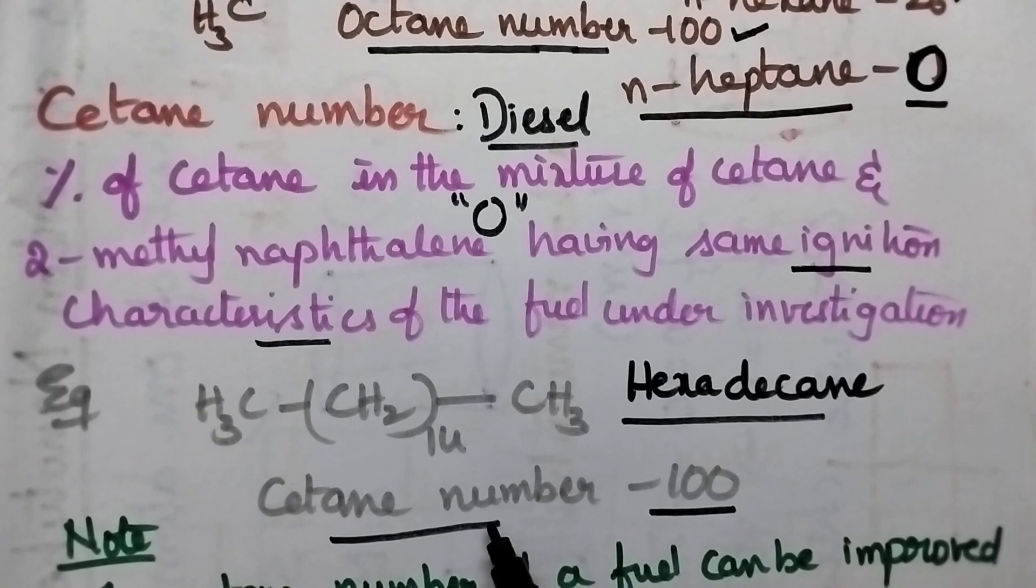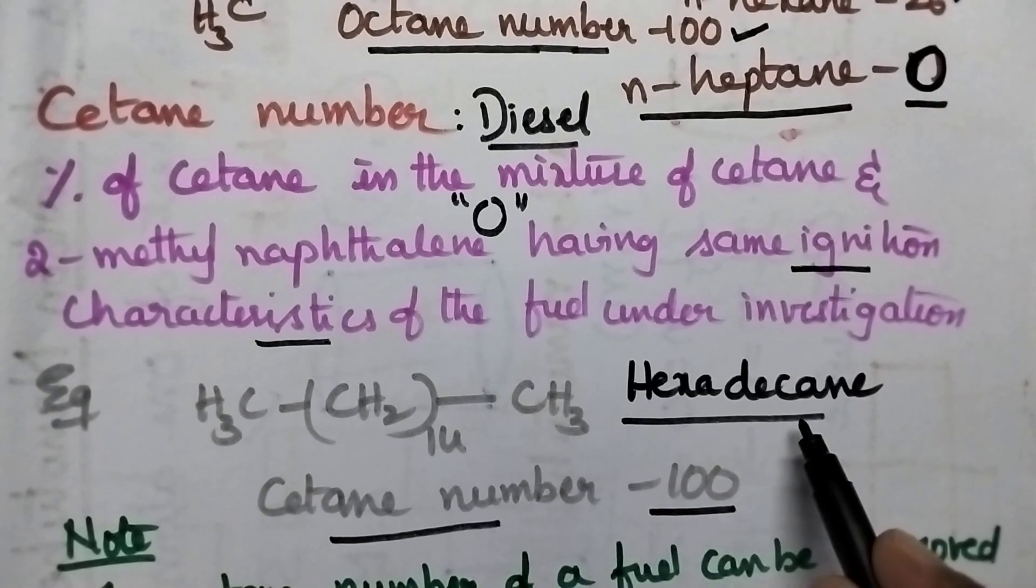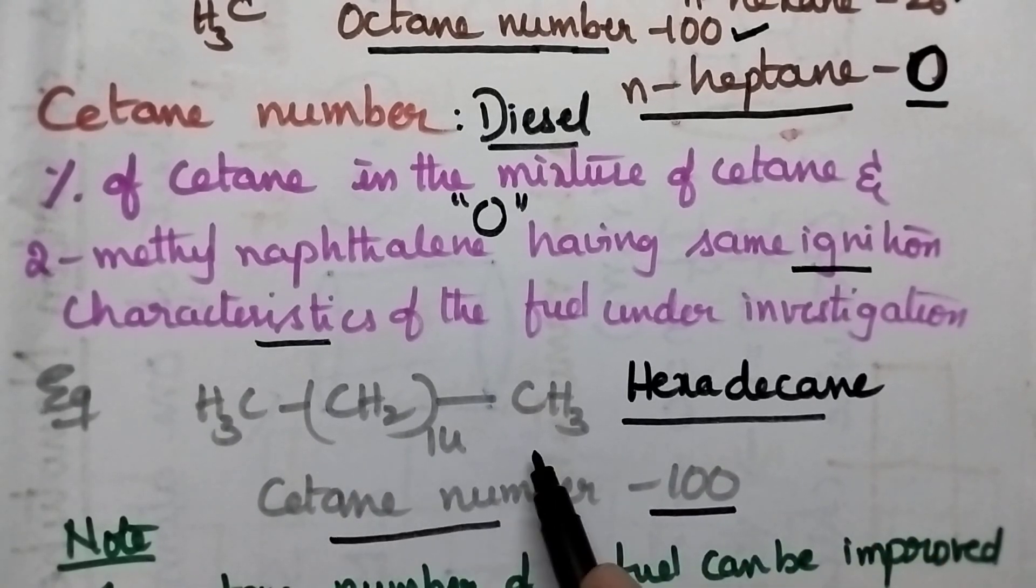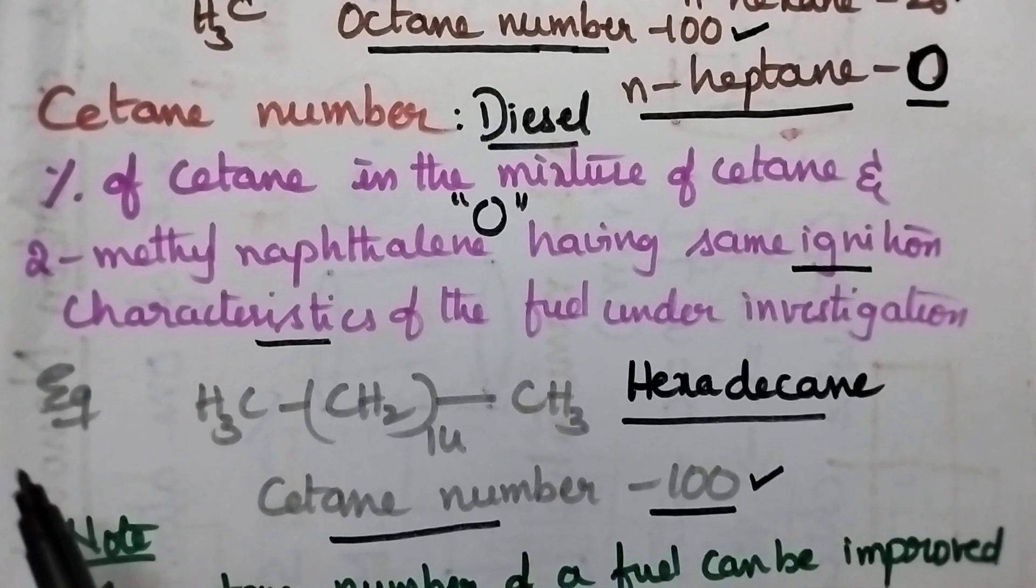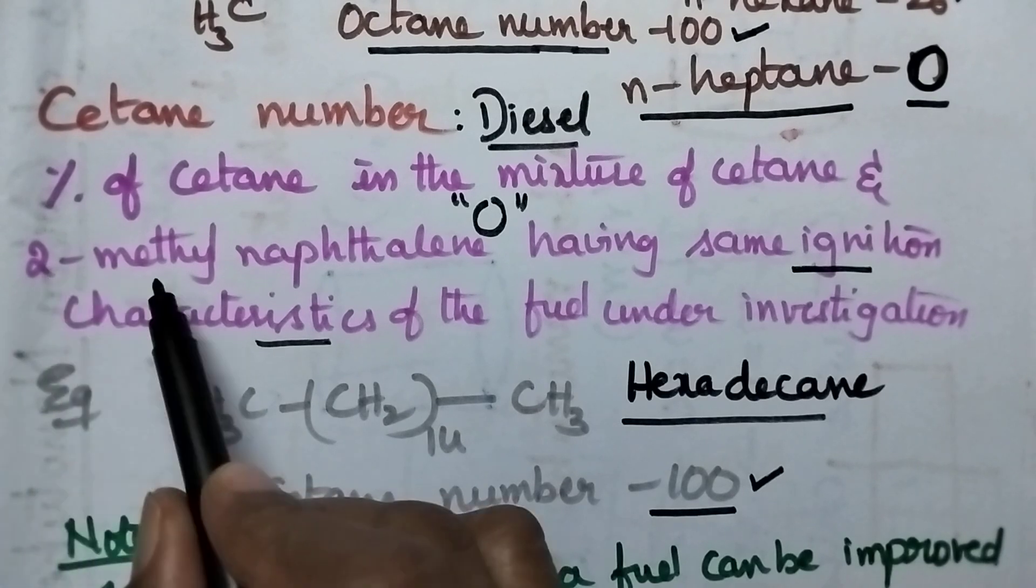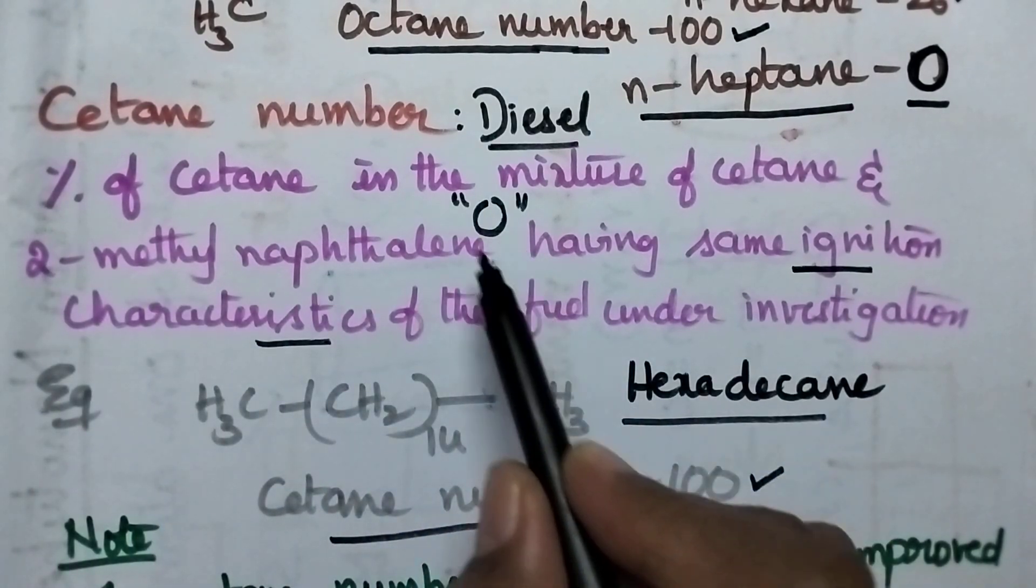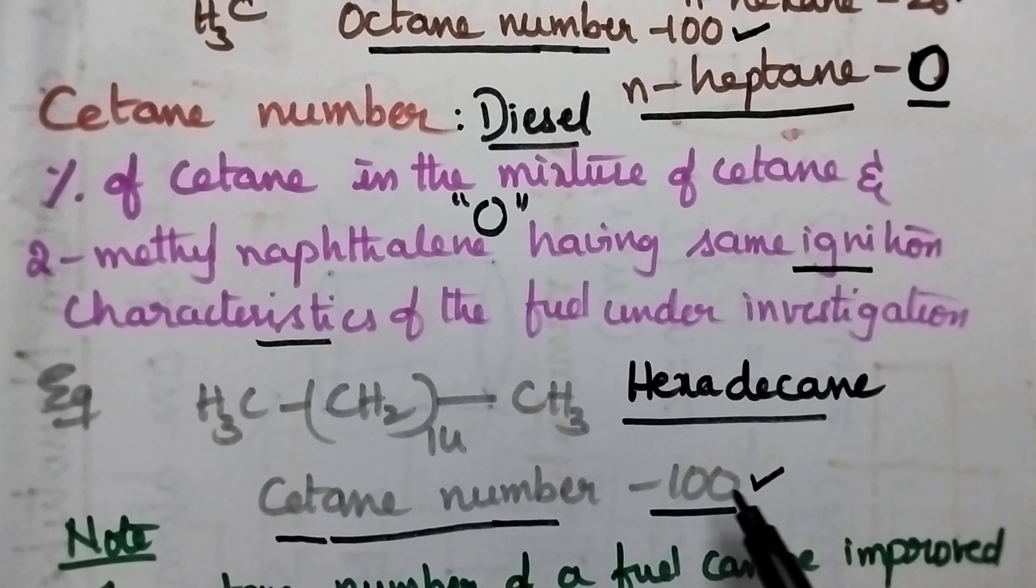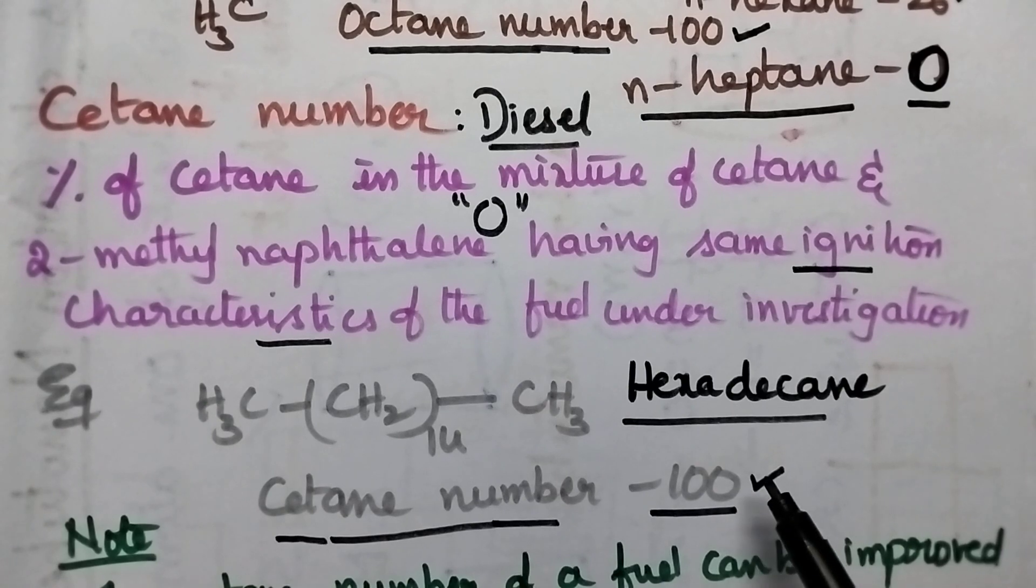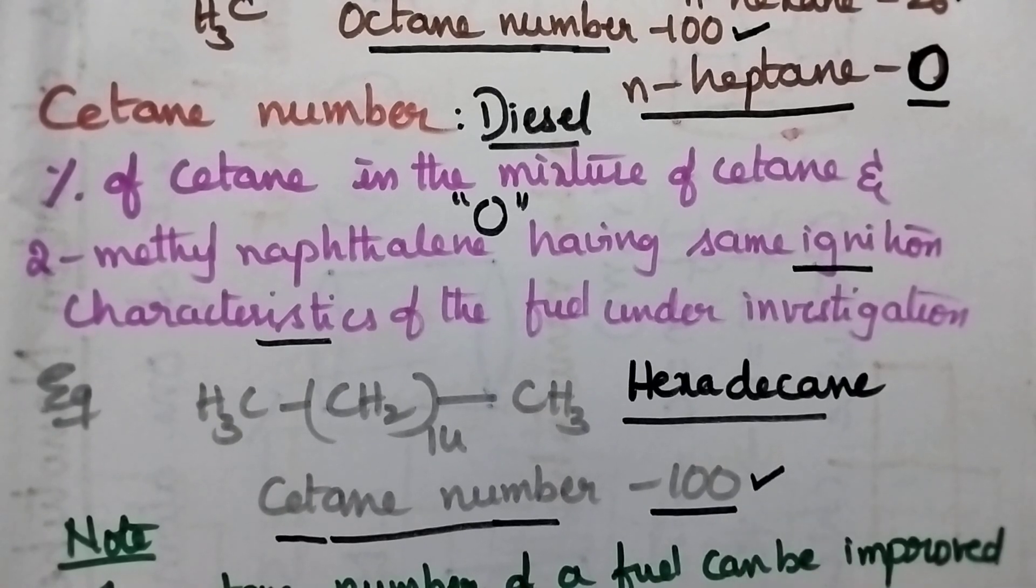Coming to the structure of cetane it can be called as hexadecane and it is having straight chain structure and its cetane number is 100 whereas the cetane number of 2-methyl-naphthalene is 0. From these two examples it is very clear that always the straight chain hydrocarbons will have high cetane number which is contrary to the octane number.